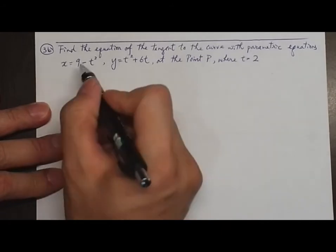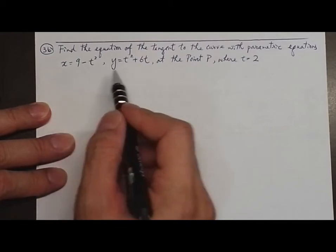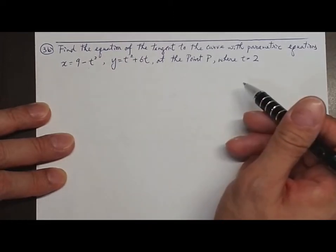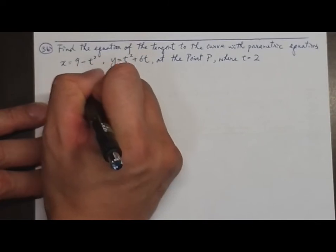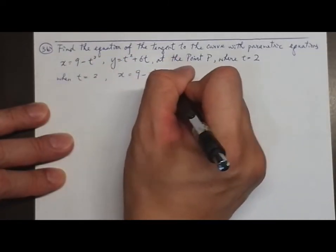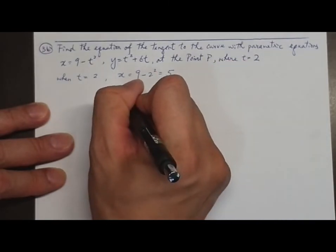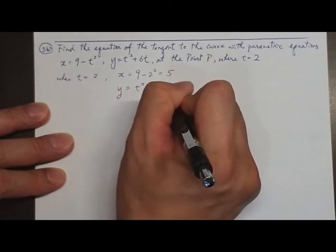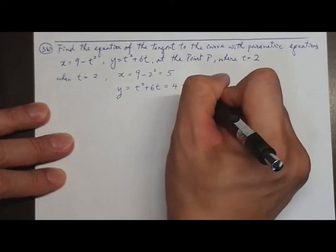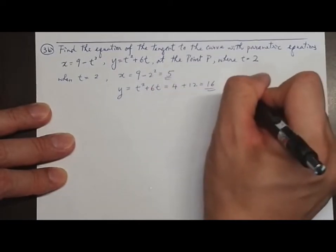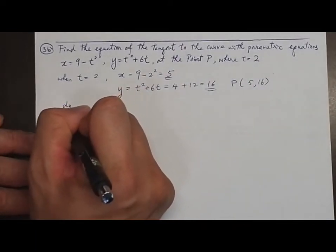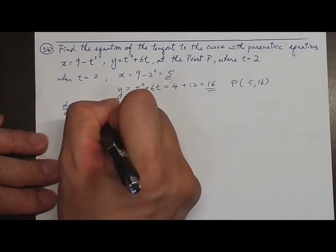Question 3b: Find the equation of the tangent to the curve with parametric equations x equals 9 minus t², y equals t² plus 6t, at point P where t equals 2. When t equals 2, x equals 9 minus 4 equals 5, and y equals 4 plus 12 equals 16. So point P is (5, 16). dy/dt equals 2t plus 6, and dx/dt equals minus 2t.